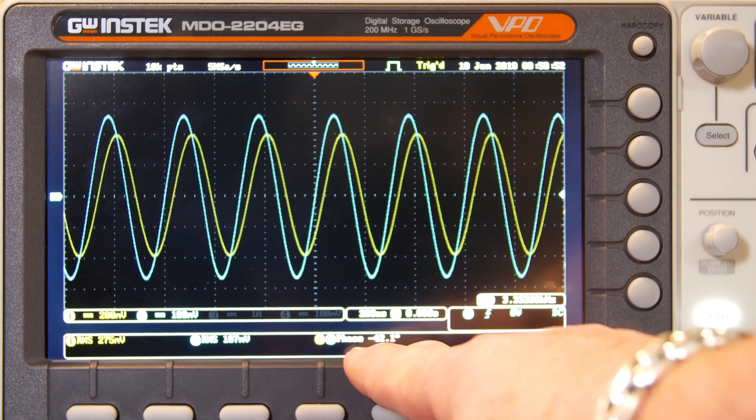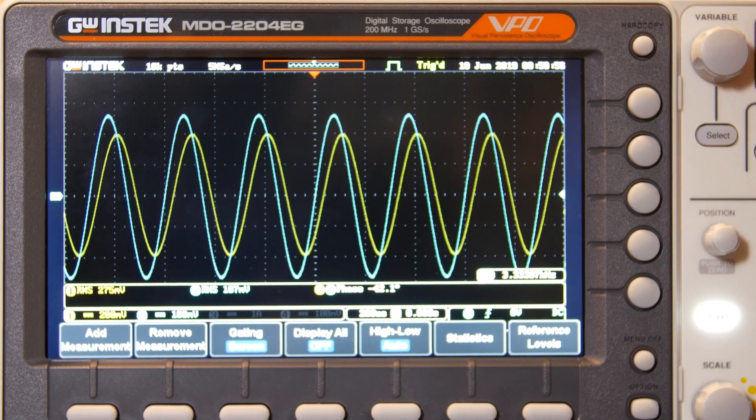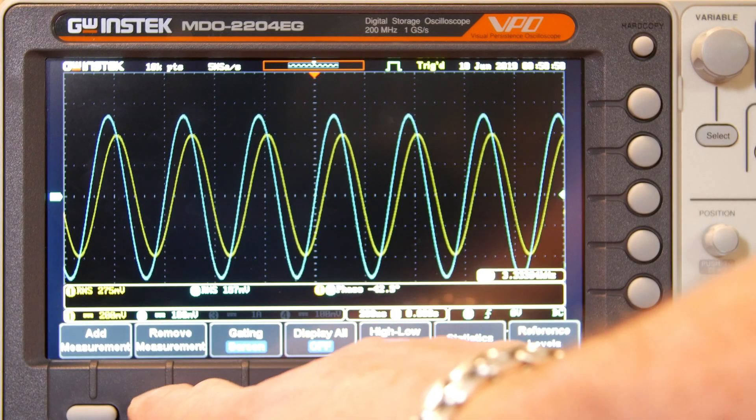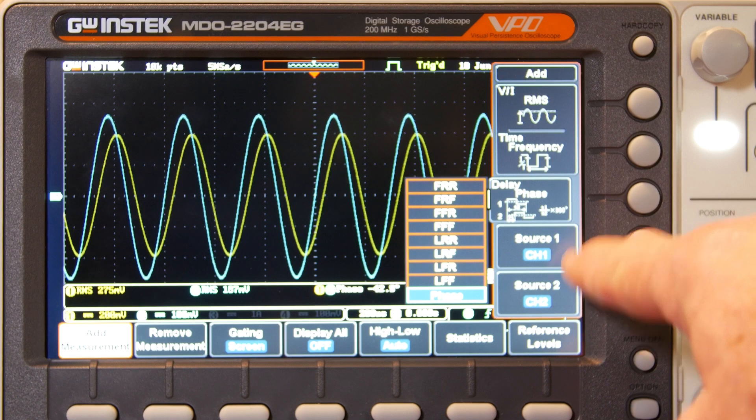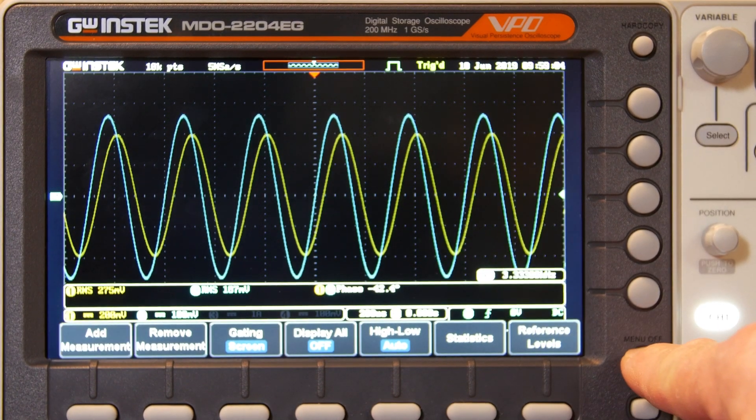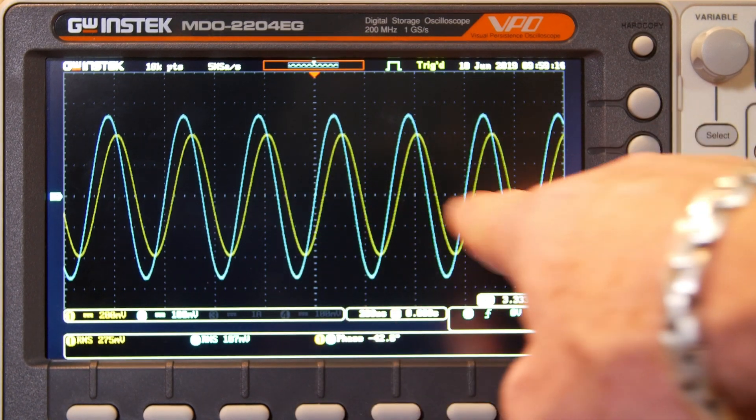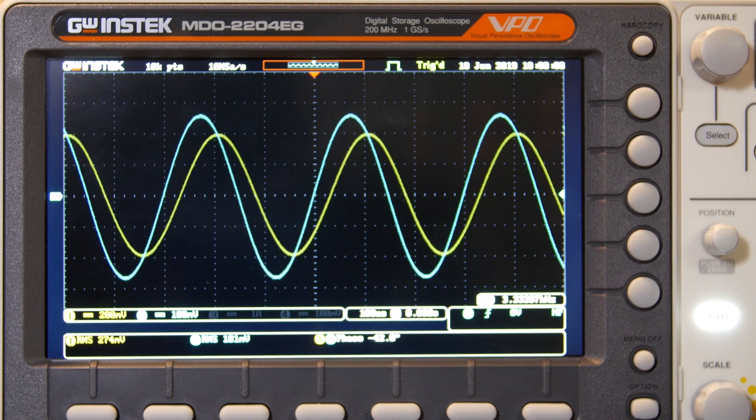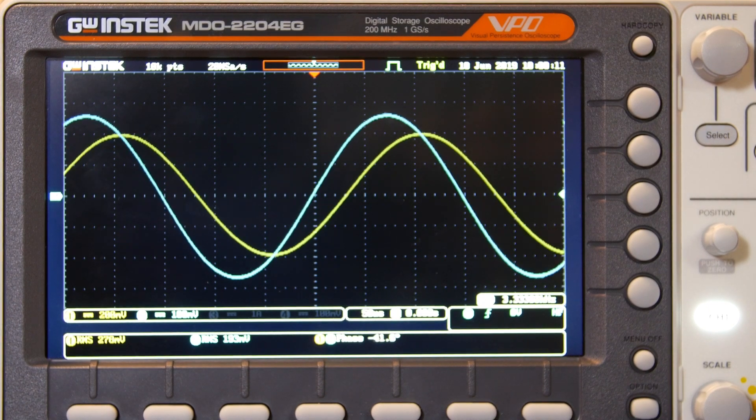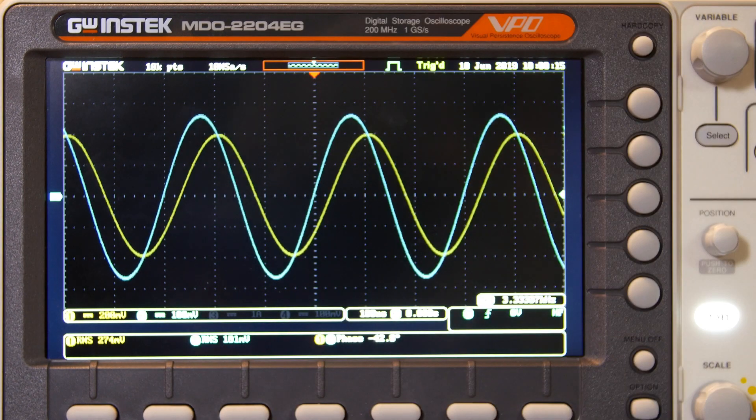So it's not as purely non-inductive as I would have wanted. But anyway, let's just continue with this. Let me show you. Now, one way, if your scope will do a measurement where you can set up, if you can add a measurement, like phase between your channels, that's one way to do it. But if you can't, then what you can do is you can just kind of eyeball it or use your cursors.